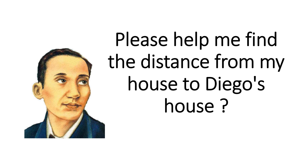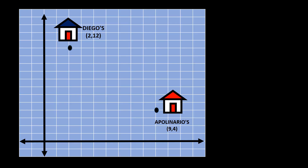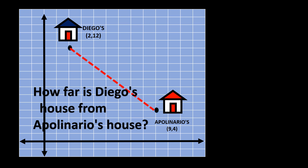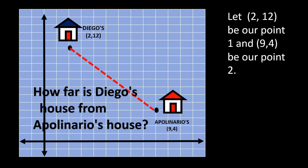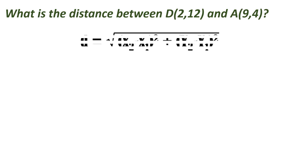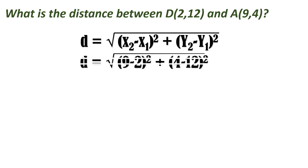Let's have example number 2. The problem is to find the distance from Apolinario's house to Diego's house. Let point 1 be (2, 12) and point 2 be (9, 4). So x sub 1 is 2, y sub 1 is 12, x sub 2 is 9, and y sub 2 is 4. Since we have all the values, let's go to the formula: square root of (9 minus 2) squared plus (4 minus 12) squared.